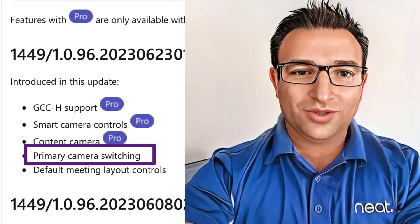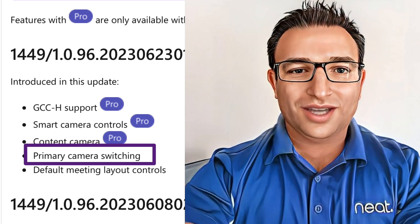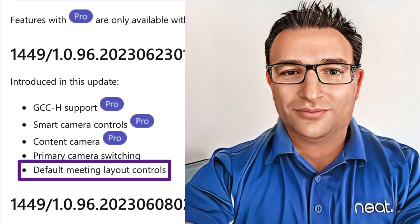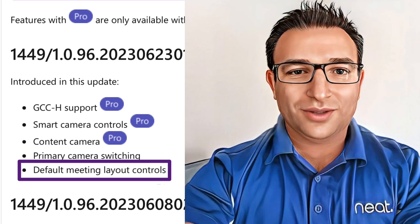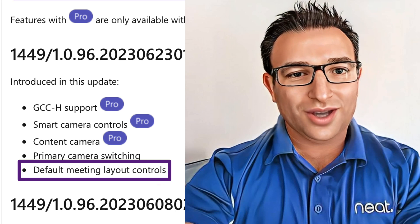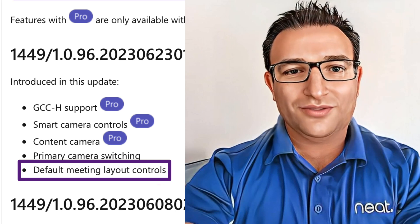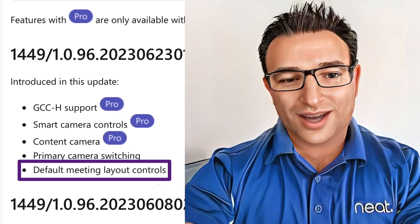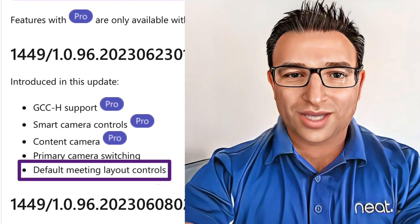You'll have the option to set the default camera, and also switch the camera during the call by pressing the down arrow next to the camera icon. Finally, we have Default Layout Controls. This is useful for single screen systems. One scenario is where you might be presenting whilst you join a call — typically the device would go full screen content, and you would not see anyone else on video on the front of room display. You would have to select the layout content and gallery. Now you can set this as your default, along with front row, content only, and people only in the MTR console settings.